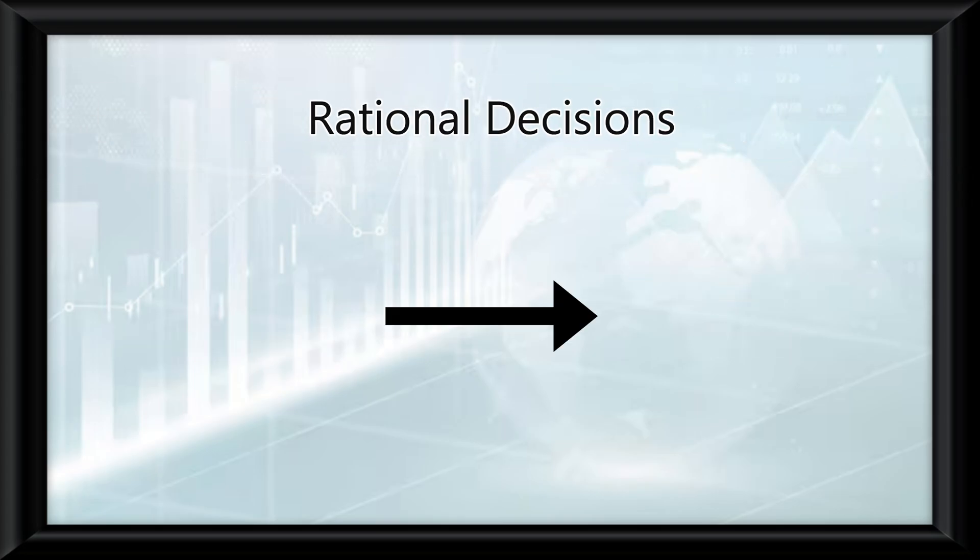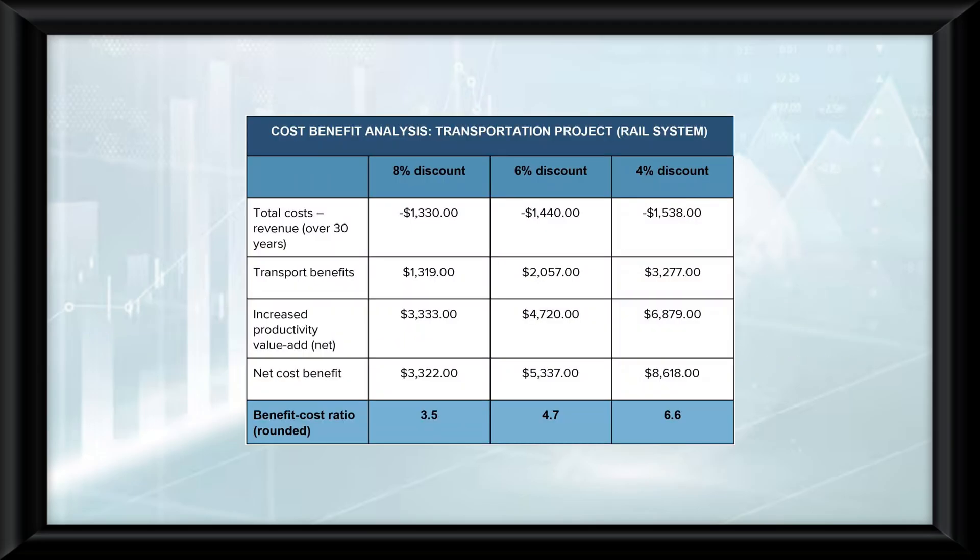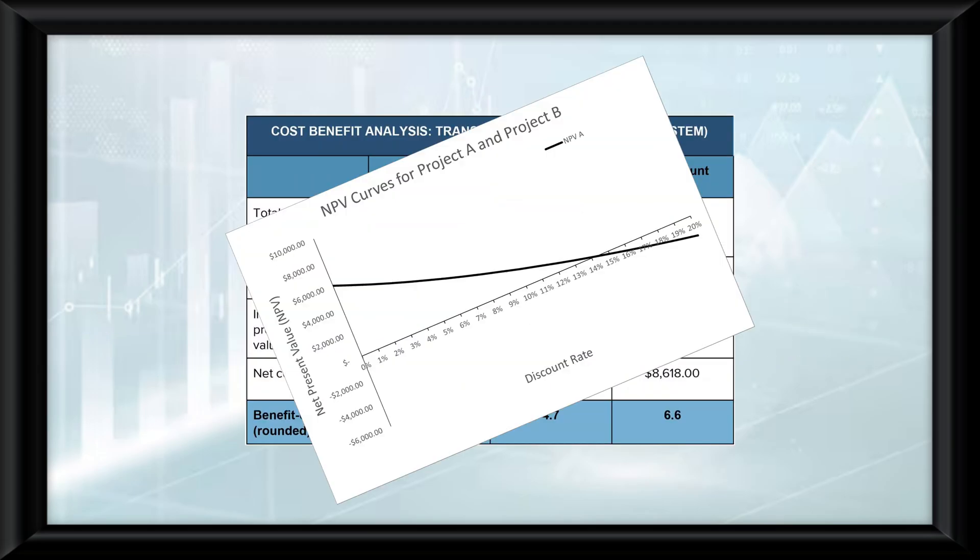Rational decisions are made by comparing the total benefits, or what you gain, to the total costs, or what you lose. This can be illustrated using a table or graph to show the relationship between benefits and costs.